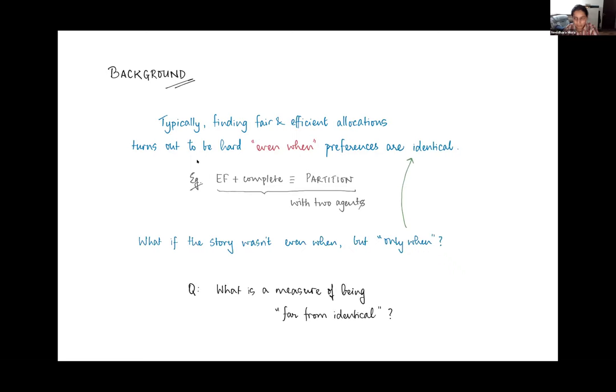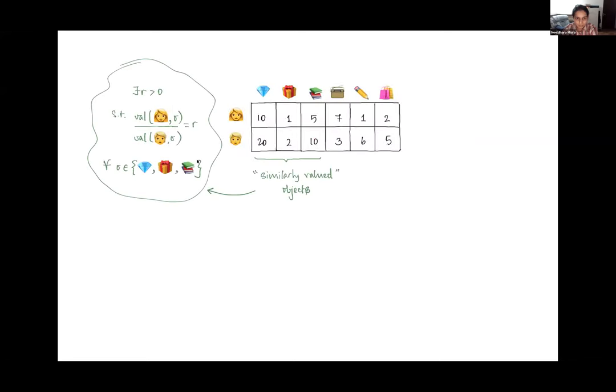That brings us to the question of how do we capture the identicalness of valuations. One way to do this is using the so called degeneracy concept, which is the largest number of items that are similarly valued by any pair of agents, and we say that items are similarly valued by a pair of agents if the ratios of their valuations are the same. It's straightforward to check that the degeneracy of a profile that consists of identical valuations is as large as it can be, which is m minus one, where m is the number of goods.